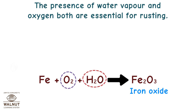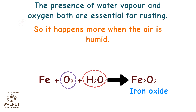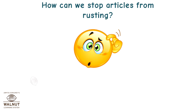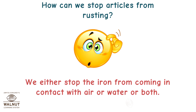The presence of water vapour and oxygen both are essential for rusting. So it happens more when the air is humid. How can we stop iron from rusting? We either stop the iron from coming in contact with air or water or both.